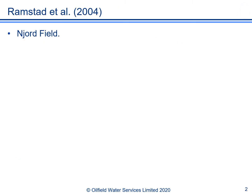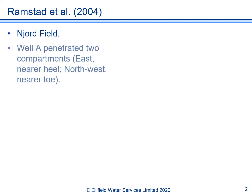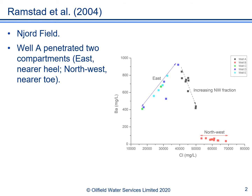This is an example from Ramstad and co-authors presented at Offshore Bergen in 2004. It is from the Njord field in the Norwegian North Sea. On this field horizontal well A penetrated two compartments: the east compartment which was nearer the heel of the well, and the northwest compartment which was nearer the toe. This figure shows some produced formation water barium and chloride analyses for this well and other wells producing from the two compartments.